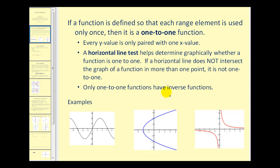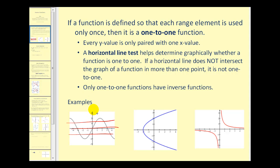For example, on this first graph, it passes the vertical line test so it's a function. However, it fails the horizontal line test because these horizontal lines intersect the graph in more than one point. So this function is not one-to-one.